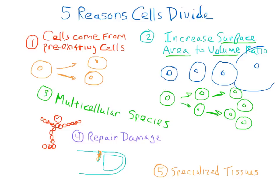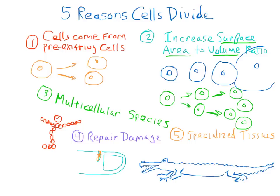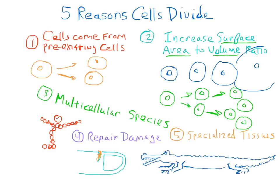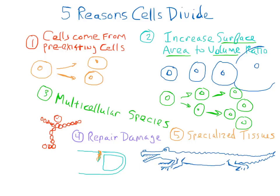And the final reason cells divide is so that species can be composed of specialized tissues. For example, this big alligator somewhere has a heart.